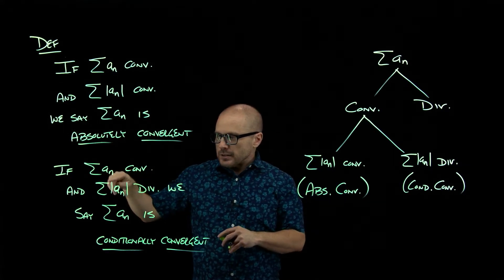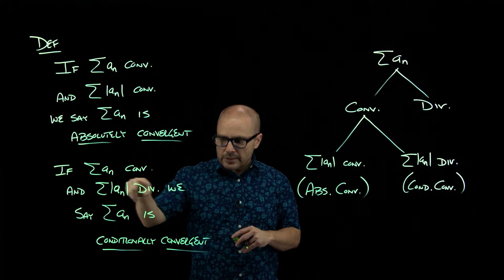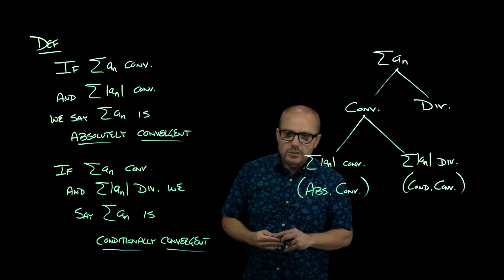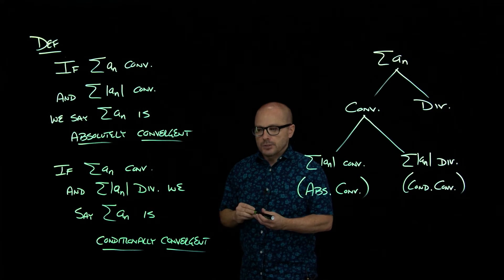Likewise, if you have a convergent series and you look at the absolute value and that series diverges, then that original series is called conditionally convergent.